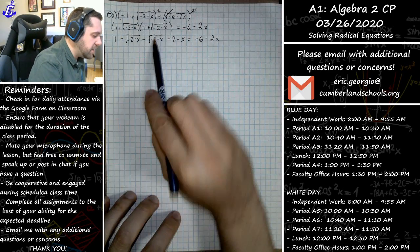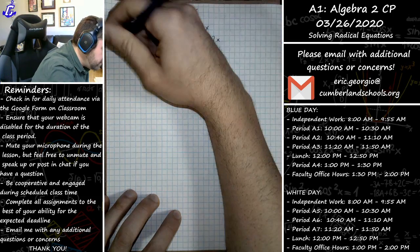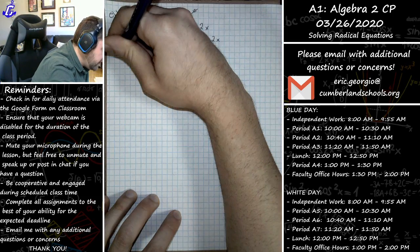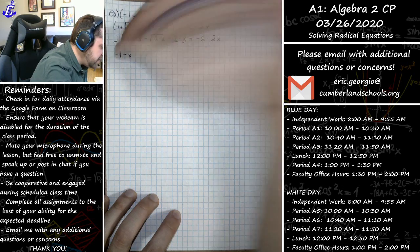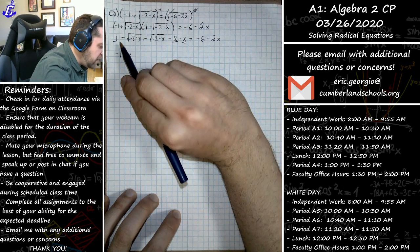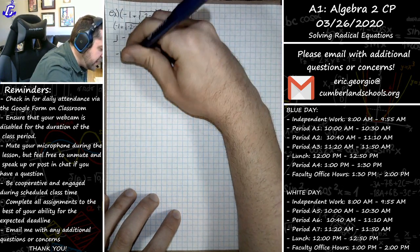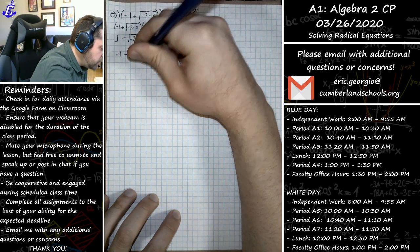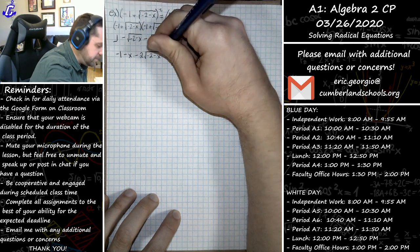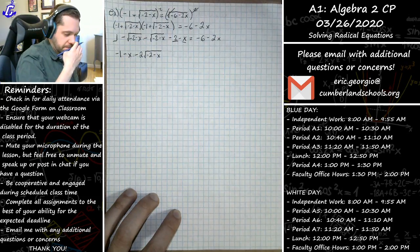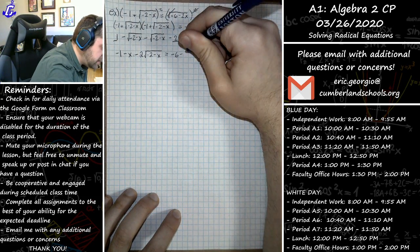Now I'll combine like terms. I have this 1 and this negative 2, which together make negative 1. I have a negative x that doesn't combine with anything, so minus x. I now have the opposite of this square root plus another one, making in total negative 2 times the square root of negative 2 minus x. And that's still equal to the right side of negative 6 minus 2x.